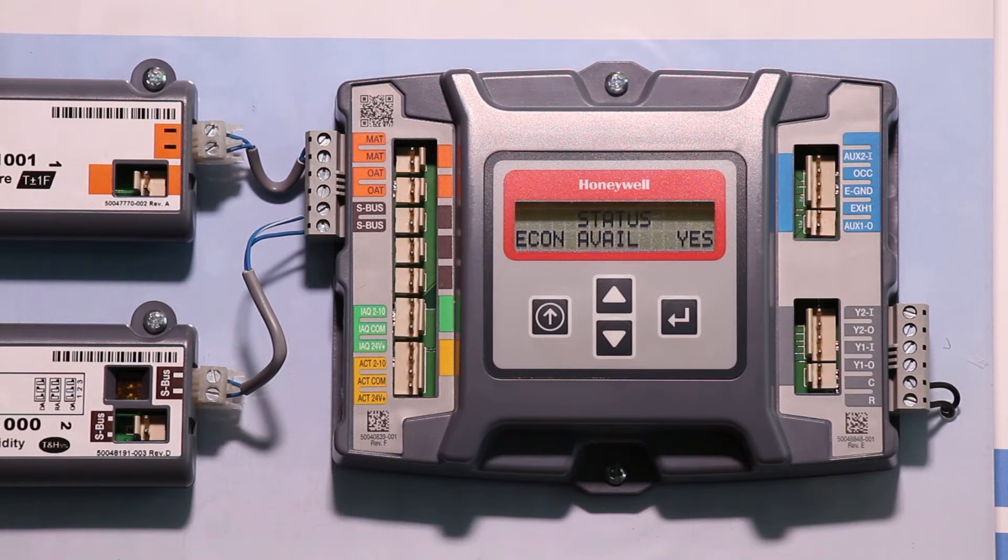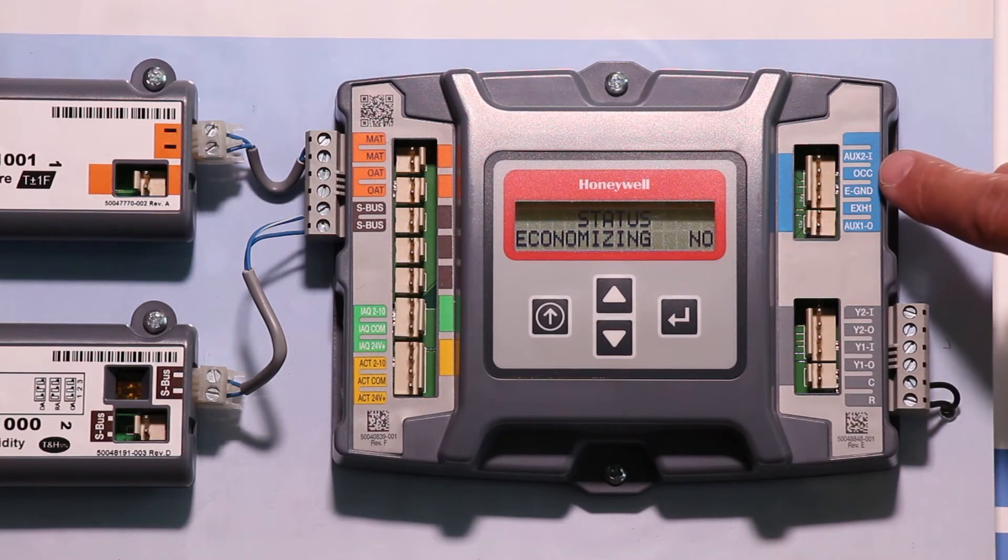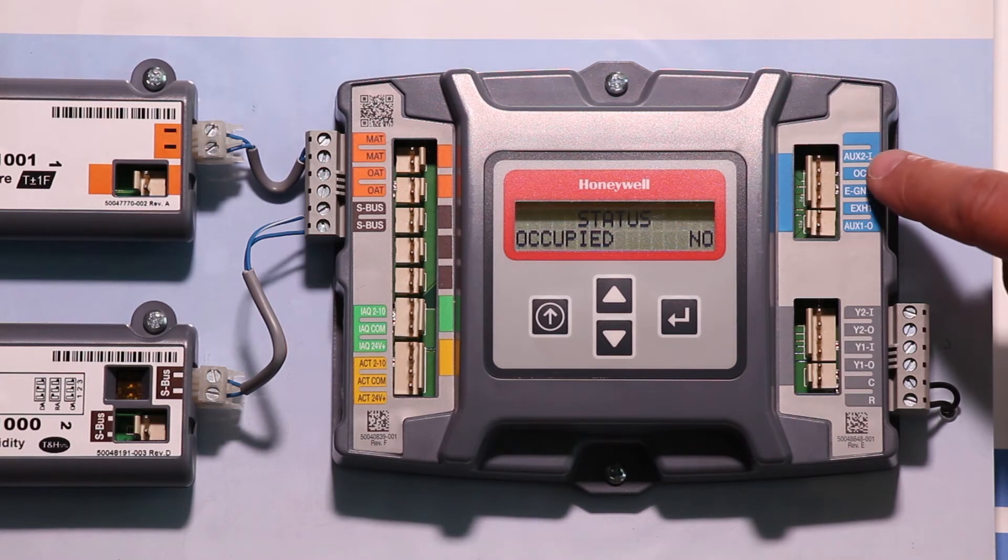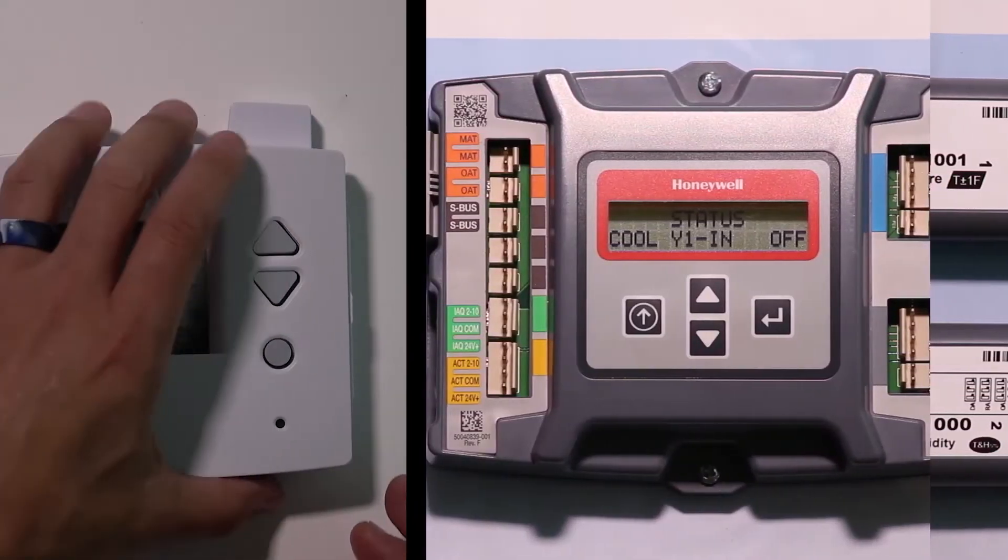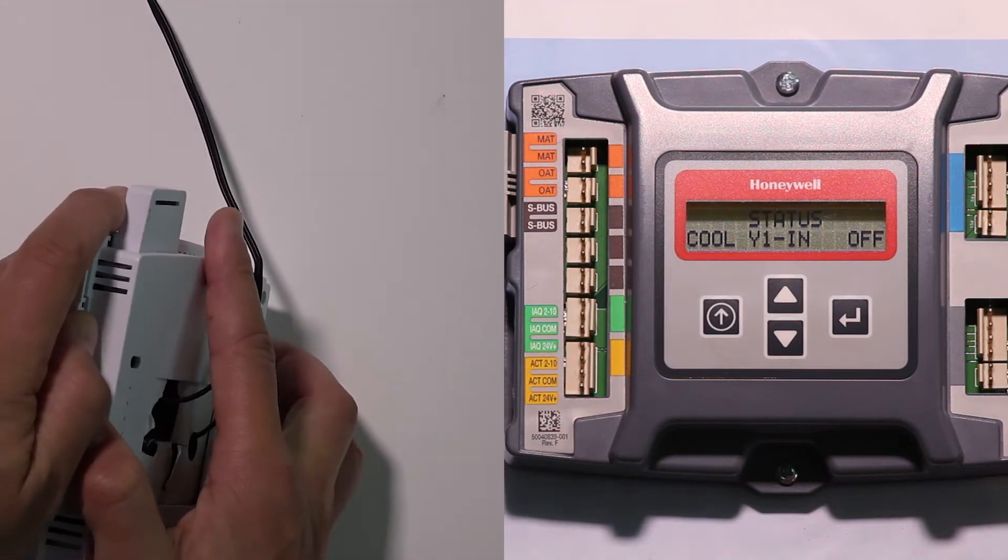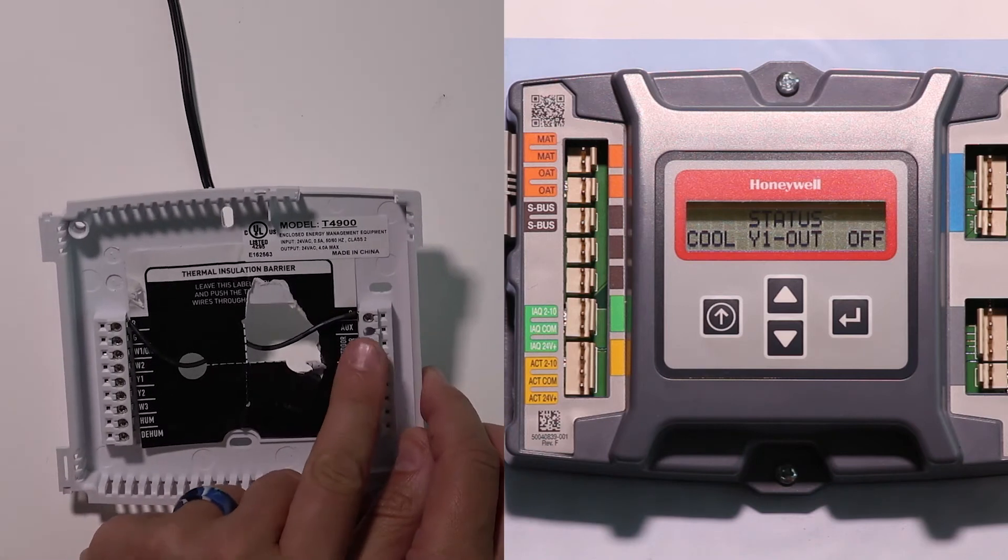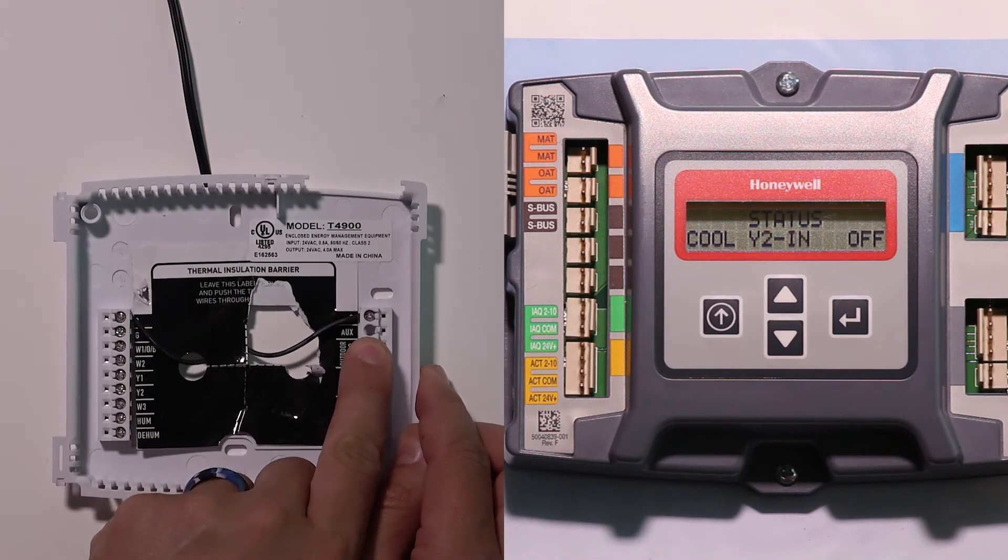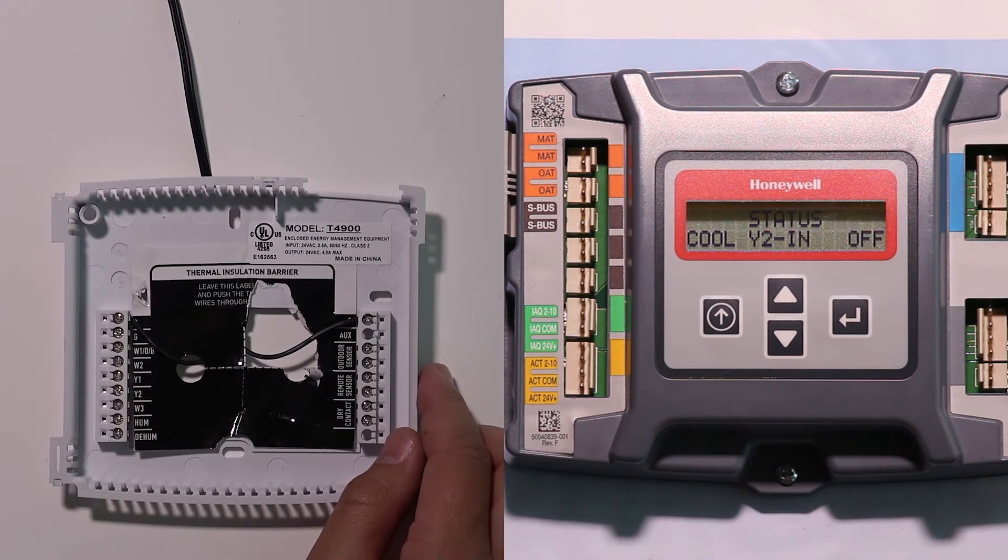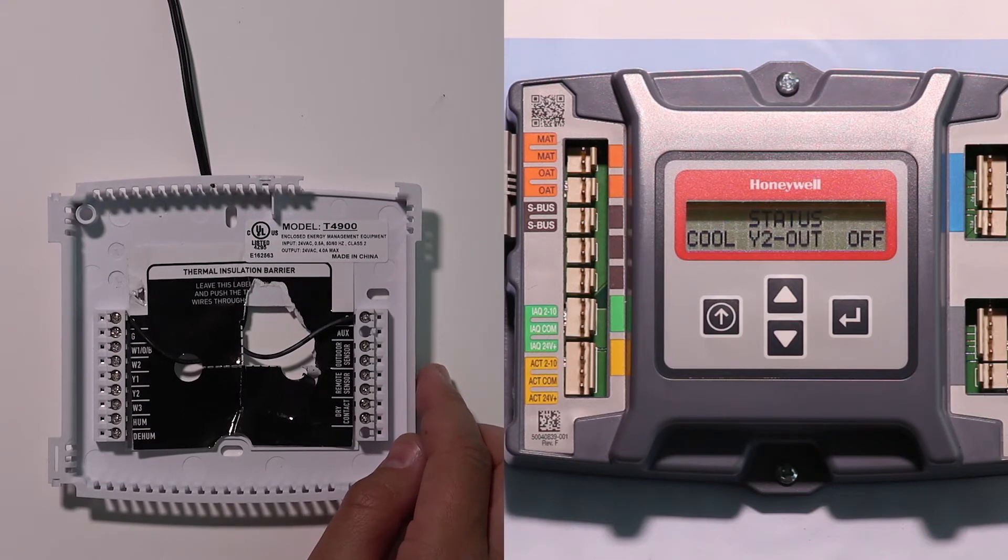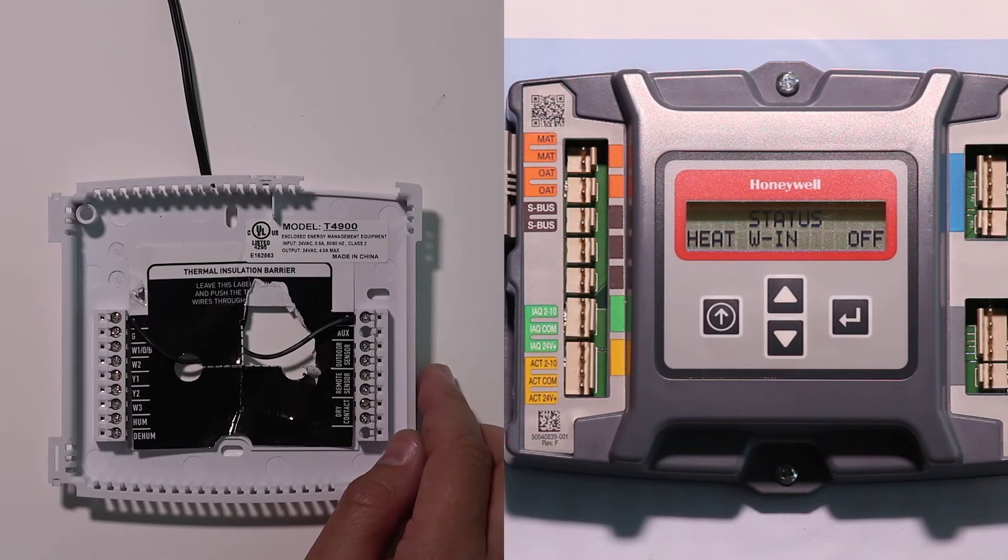So from a wiring standpoint, over here on our economizer controller we have a terminal labeled OCC for occupancy. That is an input terminal. It is waiting for a signal from somebody to tell it he is occupied. Then on our thermostat, if we pop him open and take a look at the inside here, we have this AUX terminal on here. That's a flexible terminal that we can program to do whatever we want. In our case, we're going to program it to be an output based on time schedule. So let's go ahead and do that now.